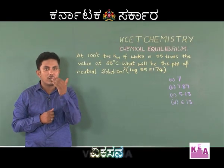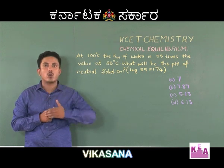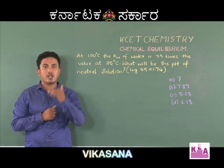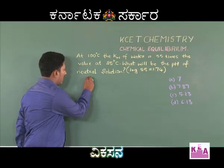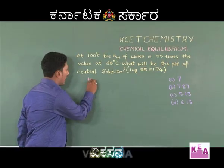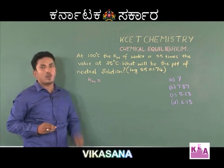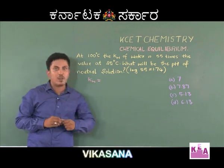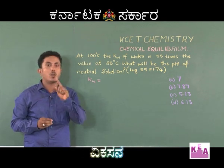I will explain what the ionic product of water is, then for a neutral solution what the pH is and how to find it, and then we will solve this problem. The ionic product of water is represented by Kw, and it is the product of H⁺ ions and OH⁻ ions.